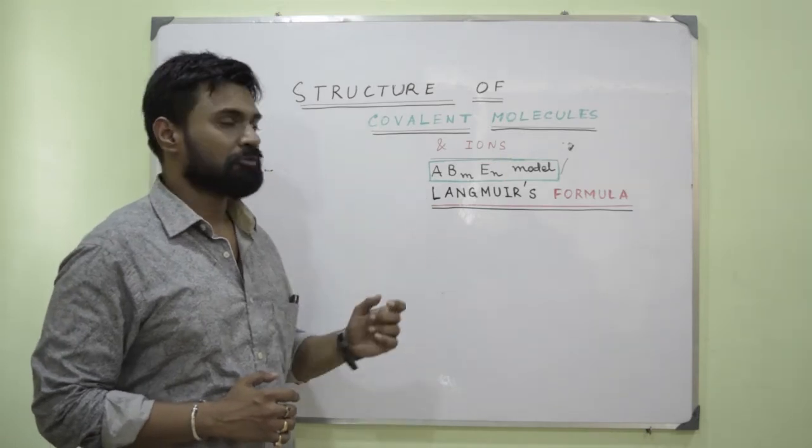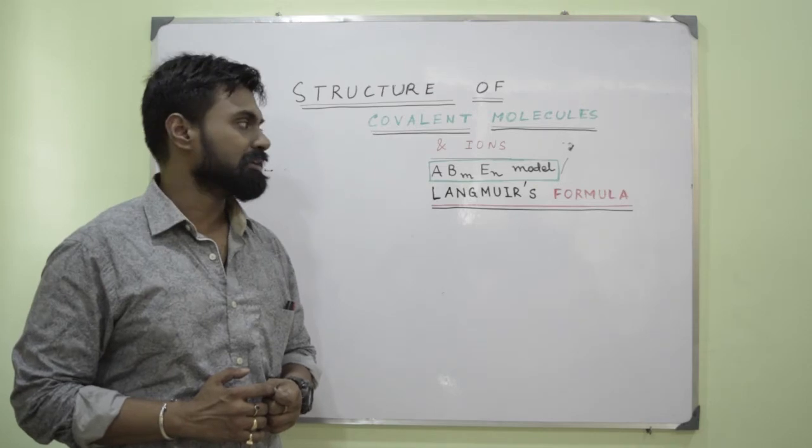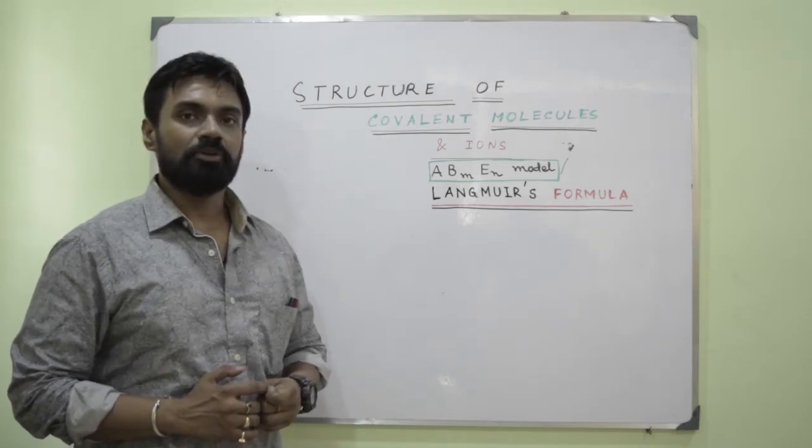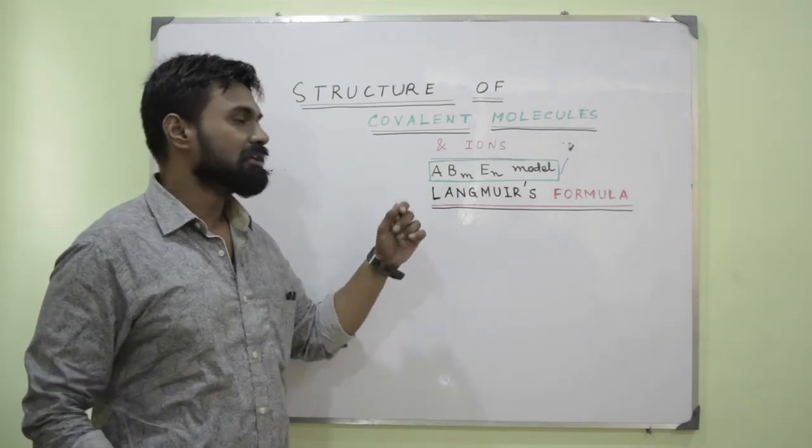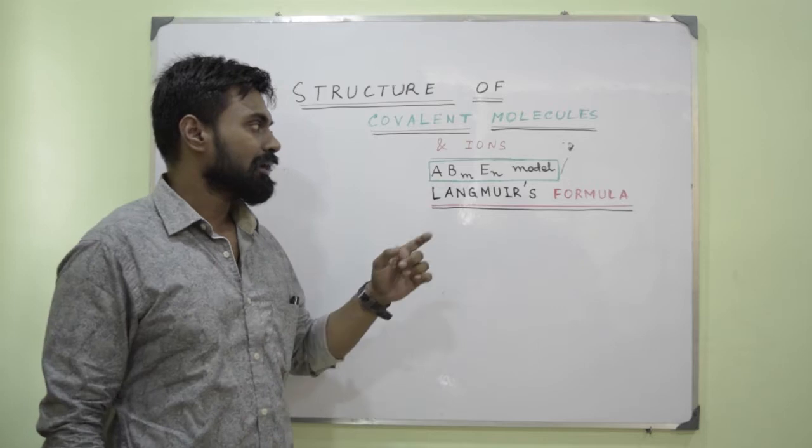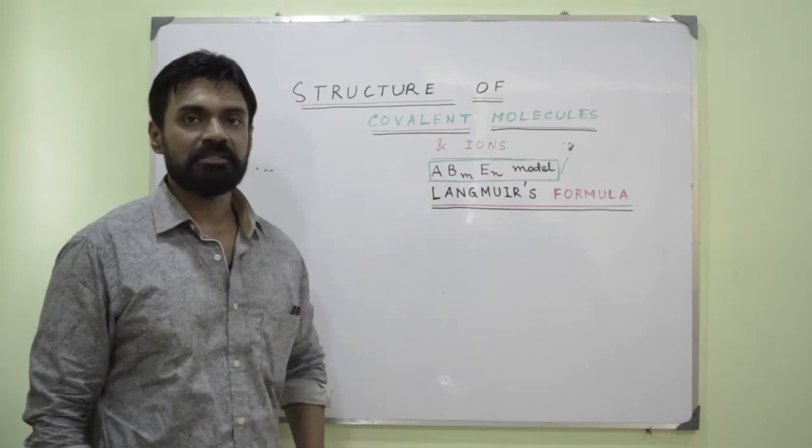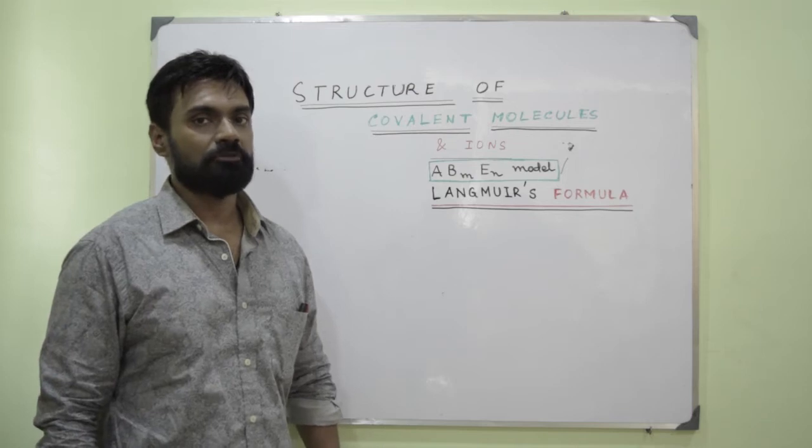Let me tell you what is the meaning of A. A stands for the central atom or the central element having lower electronegativity or higher atomic number. B stands for the terminal atoms, it can be one or more than one. m is the number of B atoms. E, as you can see, is the lone pair and n is the number of lone pairs.